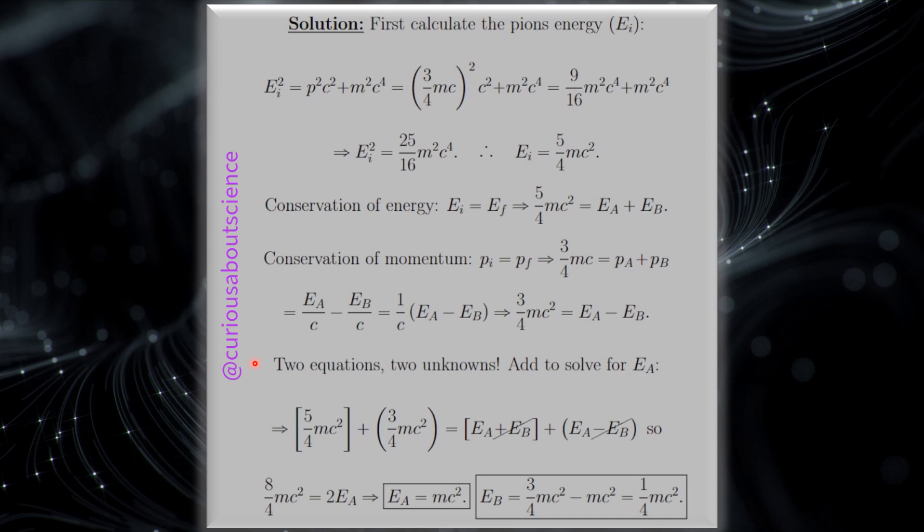So we have two equations and two unknowns. Let's see what we can do about it. So if we add the two equations together, we see that the EB terms cancel. So we're left with a combination. 5/4 and 3/4 give us 8 over 4. And that's equal to 2 EA.